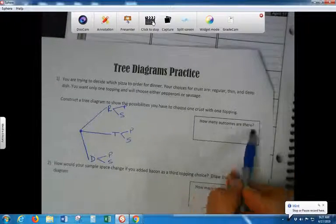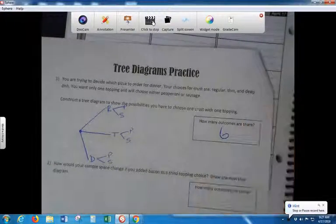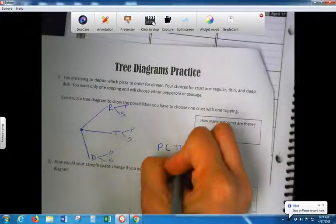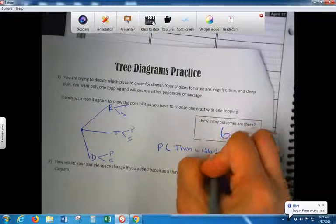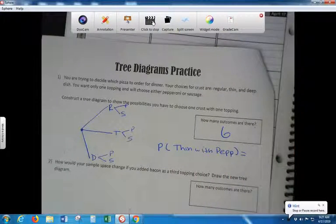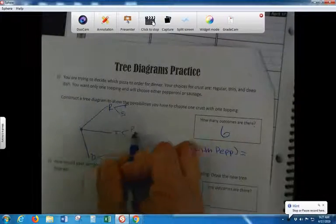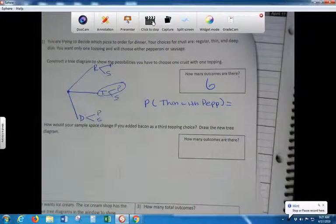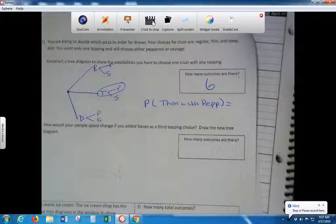How many outcomes are there? I want to know what's the probability that I will get thin with pepperoni. So circle that. Where is thin pepperoni? The middle. Thin pepperoni. This right here would be thin pepperoni. Do you guys see that? Because on the test, I may not have you draw it. I might just have you answer a question. And you have to be able to read this. Like, what does she mean by thin pepperoni? Oh, okay, here's thin, here's pepperoni. Oh, there's only one option. So that would be one out of six.